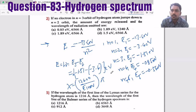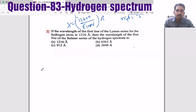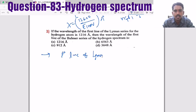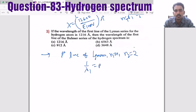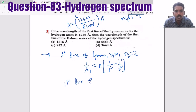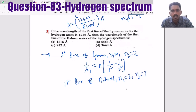You have to understand between which two states the electron is jumping and accordingly frame the equation. Next question: if the wavelength of the first line of the Lyman series is 1216 Å, find the wavelength of the first line of the Balmer series. For the first line of Lyman: 1/λ1 = R(1/1² − 1/2²) = 3R/4. For the first line of Balmer: 1/λ2 = R(1/2² − 1/3²) = 5R/36.